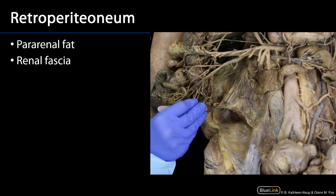Within the retroperitoneal space, you'll recall that there are anterior and posterior pararenal spaces, which are going to flank the perirenal space. The pararenal spaces are separated from the perirenal space by means of the perirenal, or just renal, fascia. So superficial to this fascia will be the pararenal spaces, and deep to it will be the perirenal space.